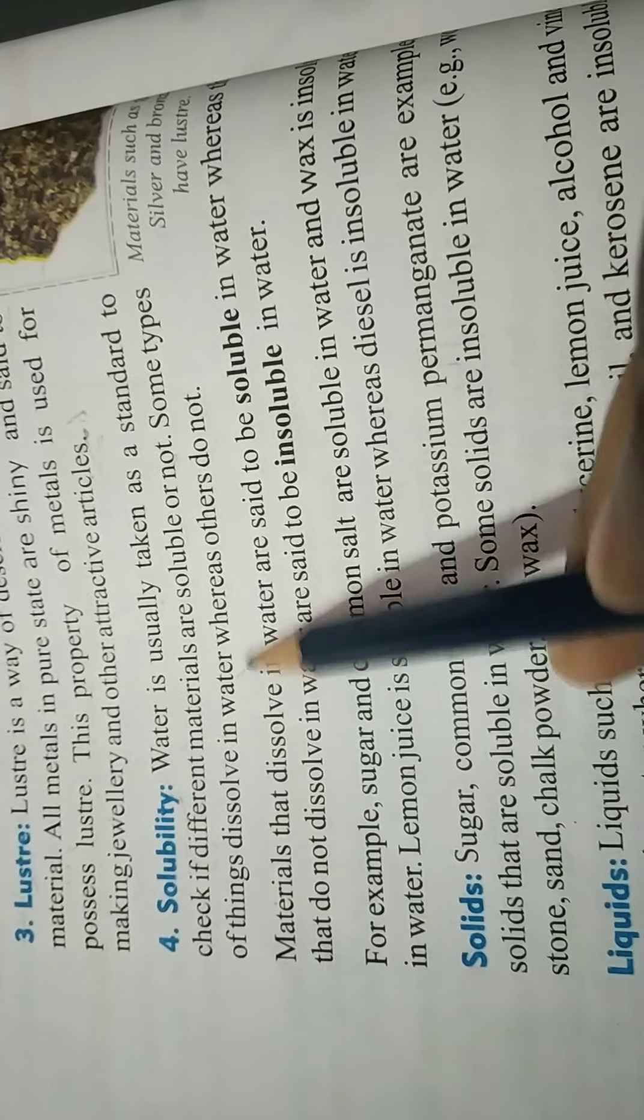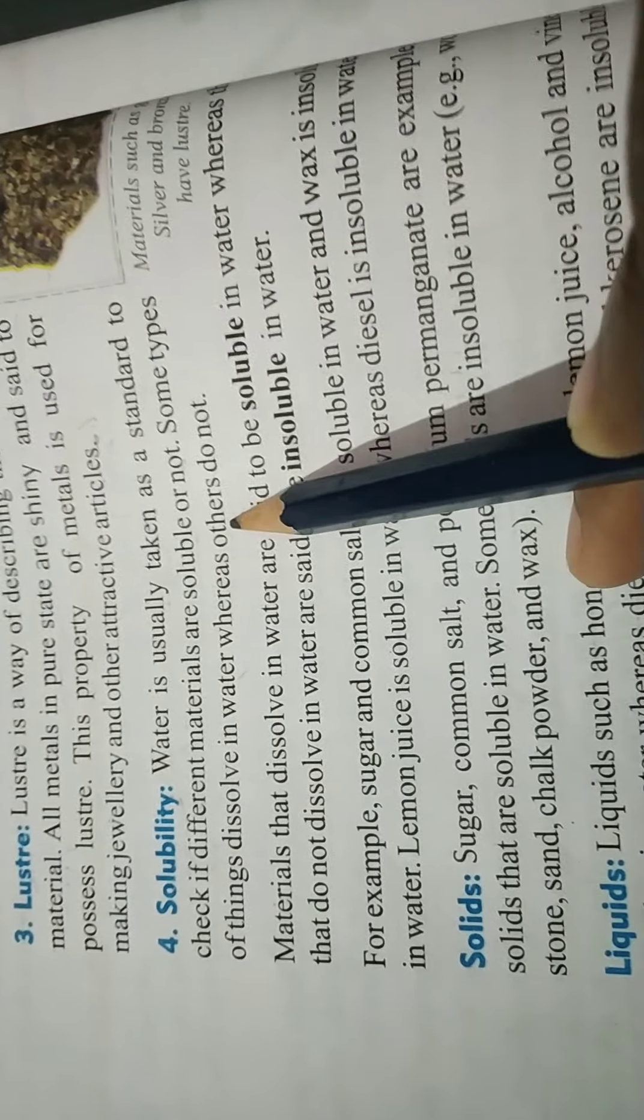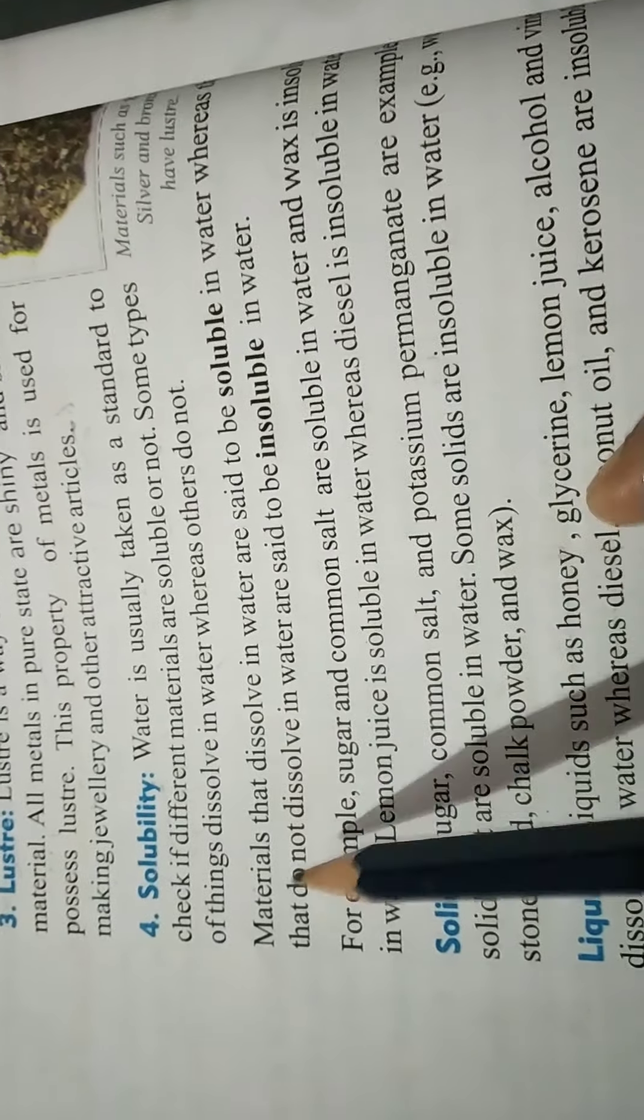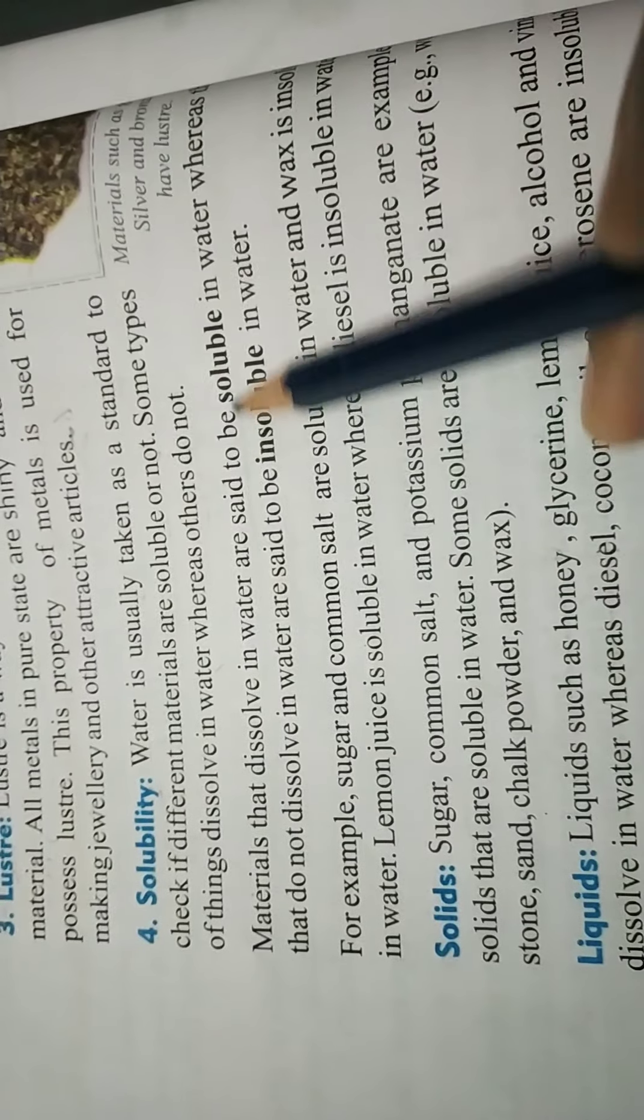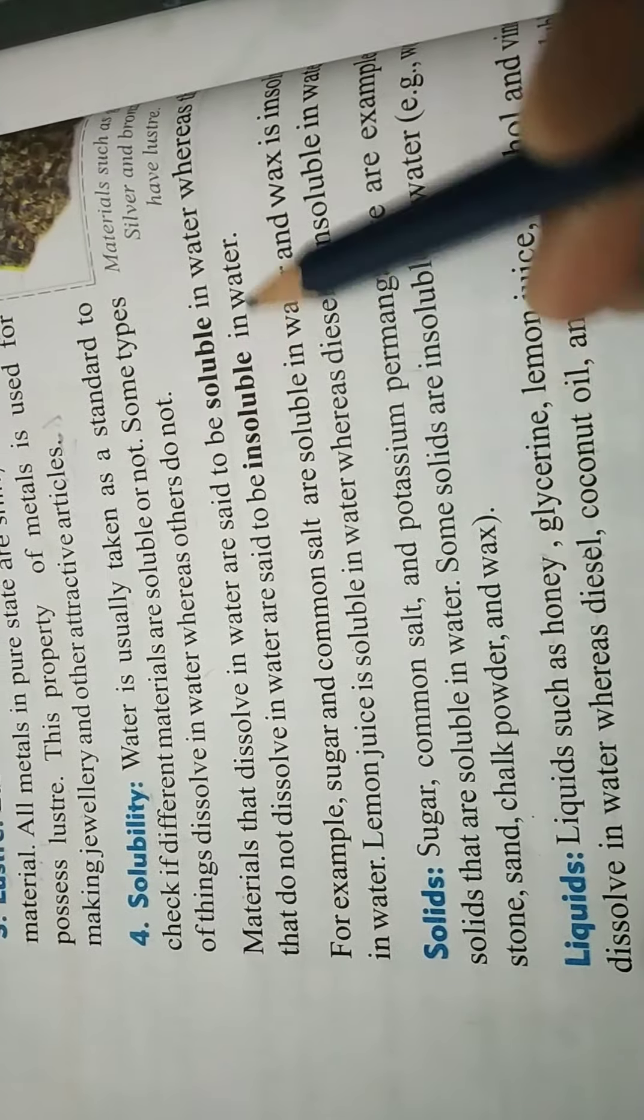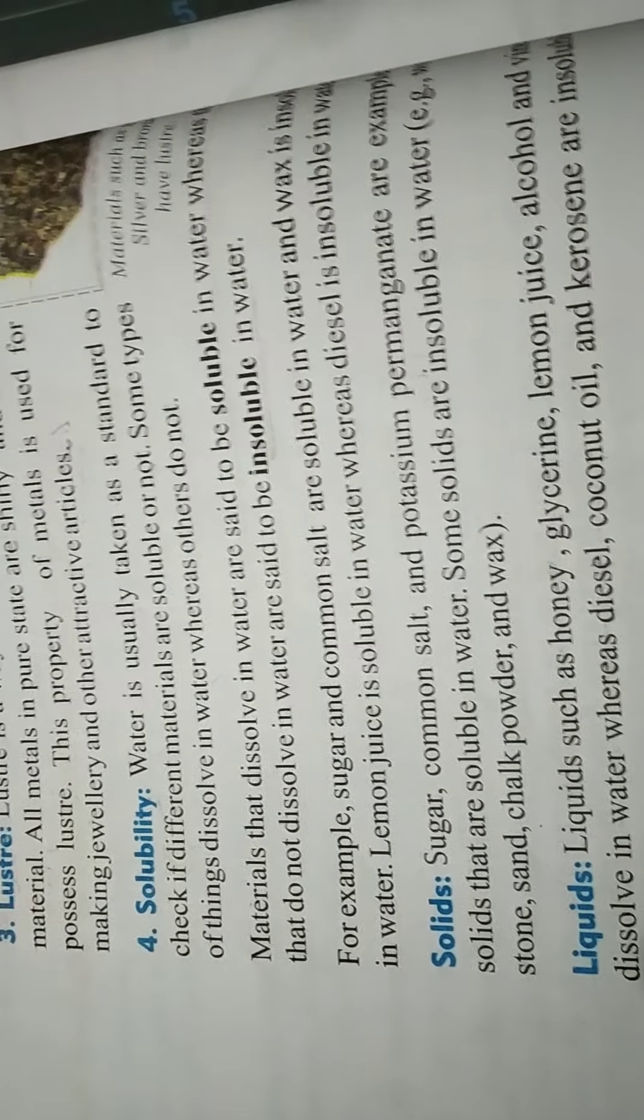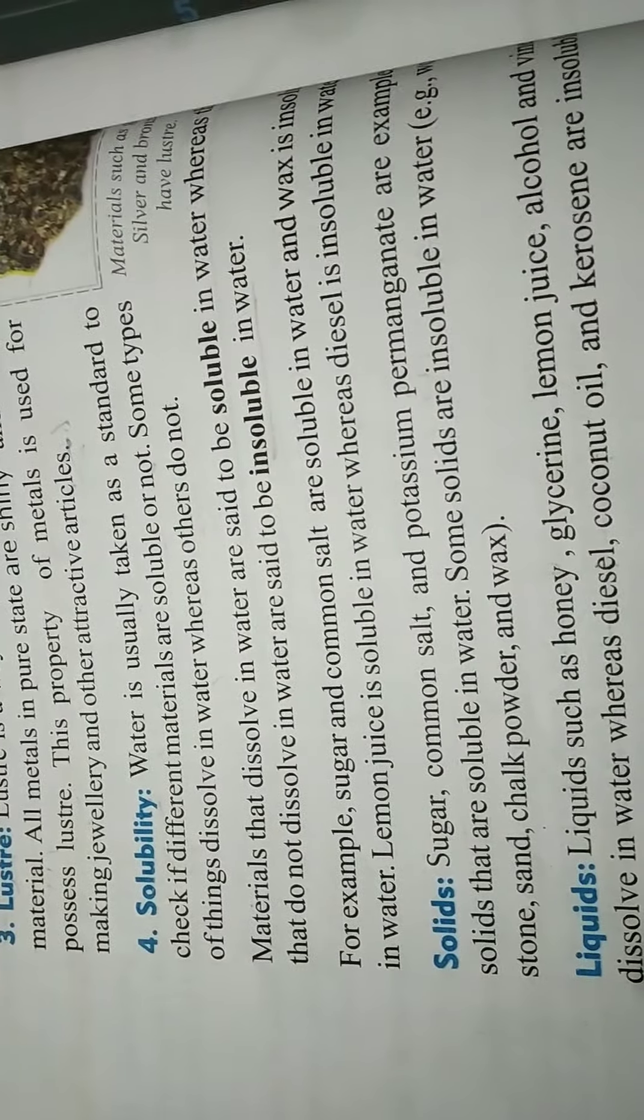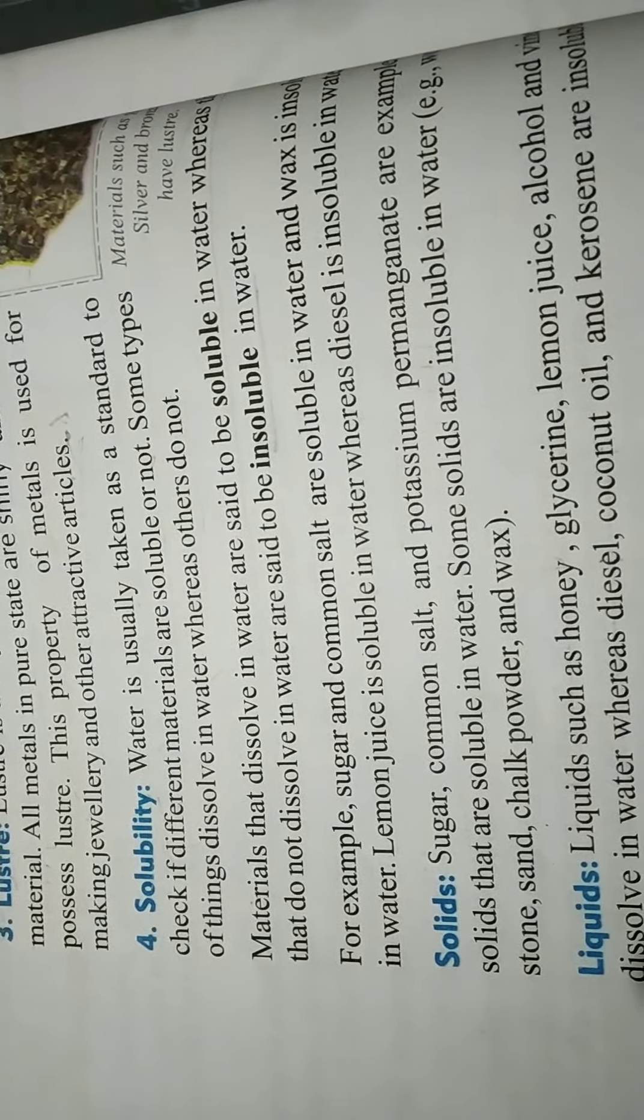Some types of things dissolve in water whereas others do not. Materials that dissolve in water are said to be soluble in water, whereas those that do not dissolve in water are insoluble in water.